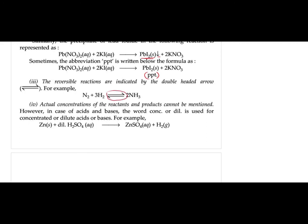Sometimes a double-headed arrow is used. A double-headed arrow shows that the reaction is reversible. For example, nitrogen and hydrogen can give ammonia, but ammonia can also decompose to give hydrogen and nitrogen again. So the reaction can take place in both directions.